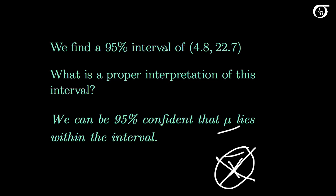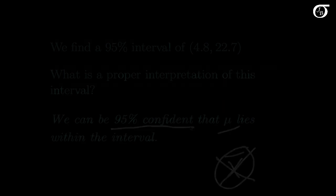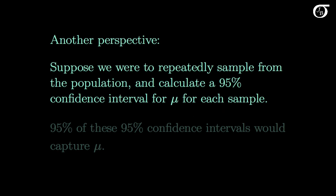Although this is a reasonable interpretation, it is a touch unsatisfying. What precisely do we mean by 95% confident? Let's look at it from another perspective. Suppose we were to repeatedly sample from the population and calculate a 95% confidence interval for mu for each sample. Then 95% of these confidence intervals would capture mu.